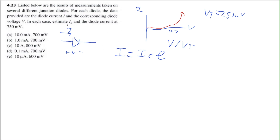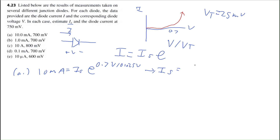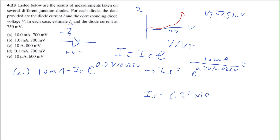Using this information, we can solve for IS. In part A, I equals 10 milliamps and V equals 700 millivolts. So we can say 10 milliamps equals IS times E to the power of 700 millivolts — the same as 0.7 volts — divided by 0.025 volts. That gives IS equal to 6.91 times 10 to the negative 15 amps.